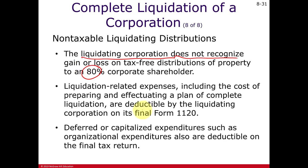The corporation must file its final annual corporate tax return and can deduct any liquidating expenses incurred. Unamortized organizational costs can be written off in this final year. However, any unused tax attributes — net operating losses, unused capital loss carryforwards, or charitable contribution carryforwards — all disappear with the liquidating corporation; there is no benefit carried forward.